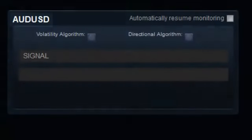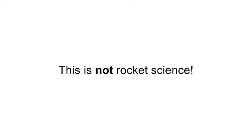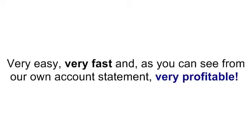The software panel shows the currency pair in the top left and the signal for that pair. If a call signal is issued, you simply click the call button in your broker platform. If a put signal is issued, click the put button in your broker platform instead. Then wait 60 seconds for the trade result. This is not rocket science — very easy, very fast, and as you can see from our own account statement, very profitable.